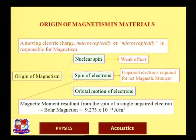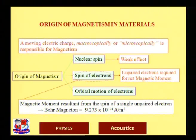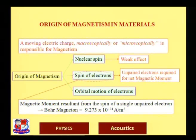We will start with the origin of magnetism in materials — why materials behave as permanent or temporary magnets, or why some materials do not exhibit magnetic properties. The origin is a moving electric charge. A moving electric charge always produces a current, and when current flows, a magnetic field is produced. A magnetic dipole is created due to the moving electric charge.